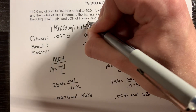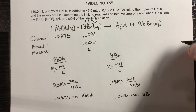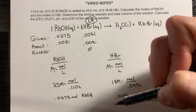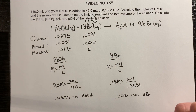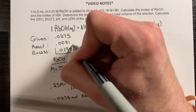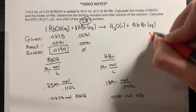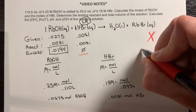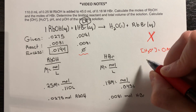The limiting reactant in this second problem is the acid — all of it will react, leaving zero. The same amount reacts in terms of rubidium hydroxide, leaving 0.0194 moles of rubidium hydroxide in excess. This is the number we key in on. What you cannot do at this point is assume that the H₃O⁺ concentration equals zero. Some might think that because there's zero acid left over, the H₃O⁺ concentration would be 0 molar.